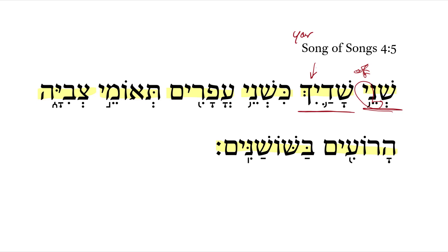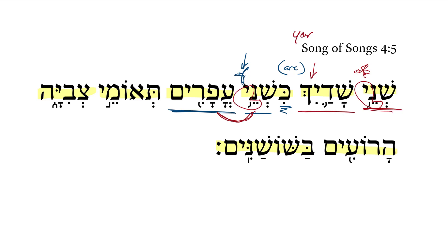We have a verbless clause, so we have 'are like two of the fawns.' We might say 'are like two fawns' and leave out the 'of,' but you can see how it's in that construct package there with the masculine plural construct ending.